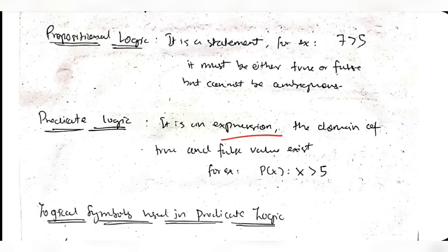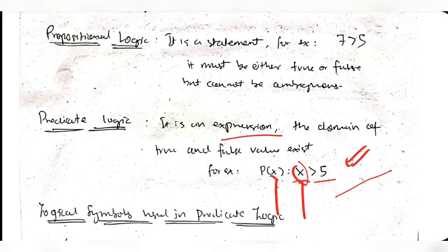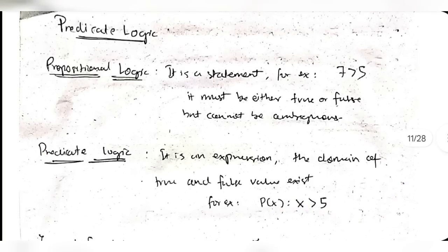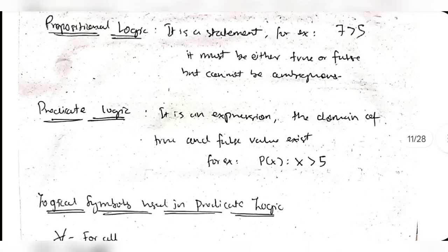In predicate logic, p(x) = 'x > 5' can be true or false depending on x, and x can be integers, whole numbers, natural numbers, real numbers, etc. The domain of x determines its possible values. This is the subtle difference between propositional and predicate logic that you need to know.